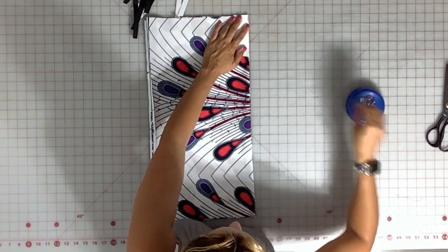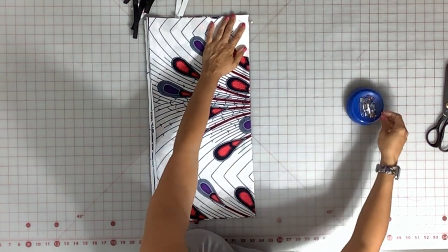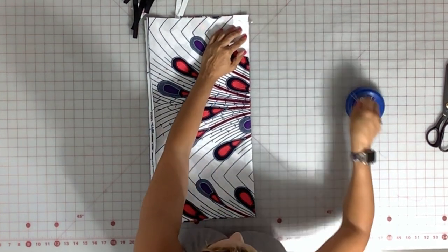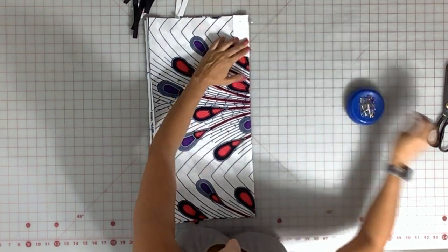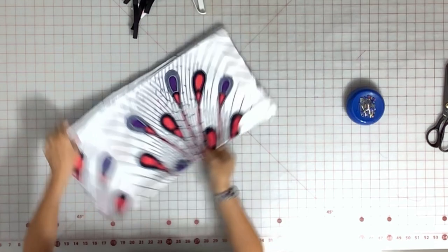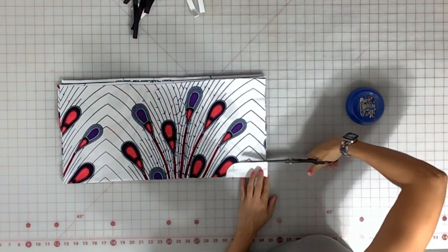Grab your armhole template and put it right up against that edge. So now we have the two folds. Remember, pin this in place so that way it doesn't go slipping and sliding. You don't want any surprises when you're cutting some armholes.